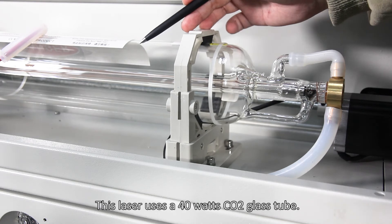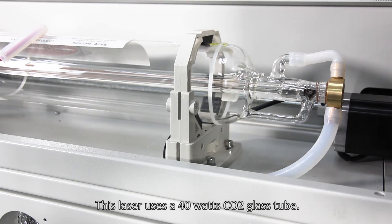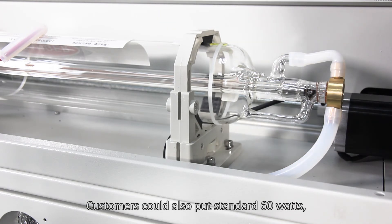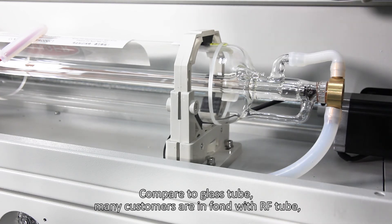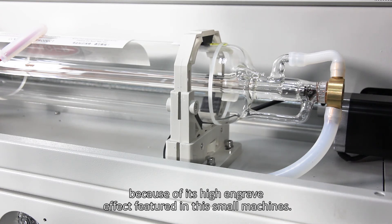Now comes the laser tube part. This laser uses a 40W CO2 glass tube. Customers can also install a standard 60W glass tube or RECI 30W into this laser. Compared to glass tubes, many customers prefer the RF metal tube because of its high-efficiency performance featured in these small machines.